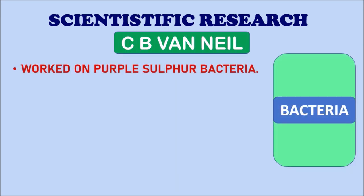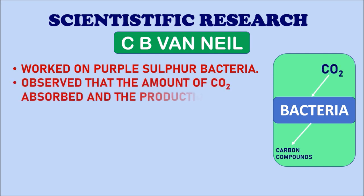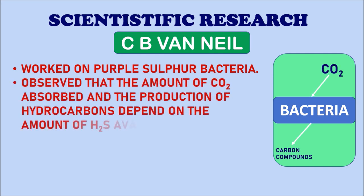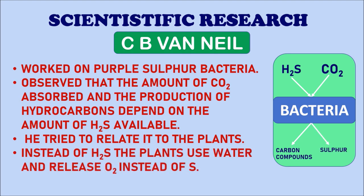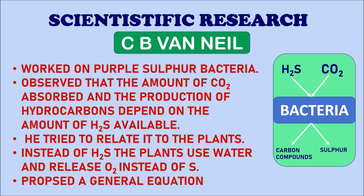The next scientist is C.B. Van Niel. He worked on purple sulfur bacteria and observed that the amount of carbon dioxide absorbed and the production of hydrocarbons depend on the amount of H2S available. He tried to relate this to plants — instead of H2S, plants use water and release oxygen, whereas the bacteria release sulfur. With these observations, he proposed a general chemical equation which we discussed earlier.